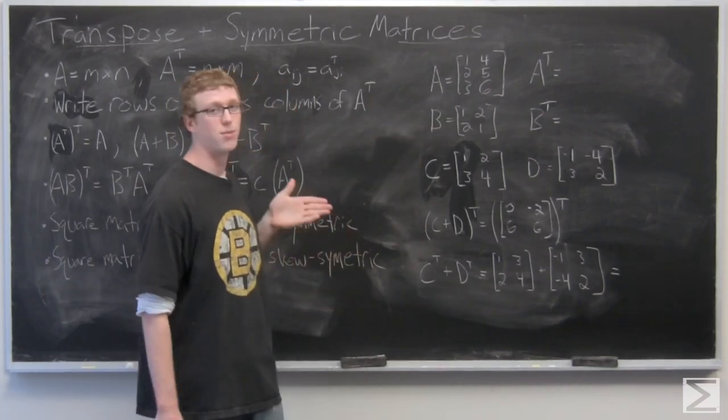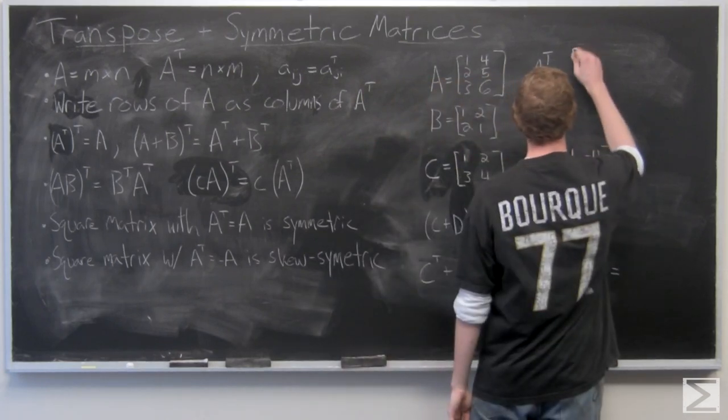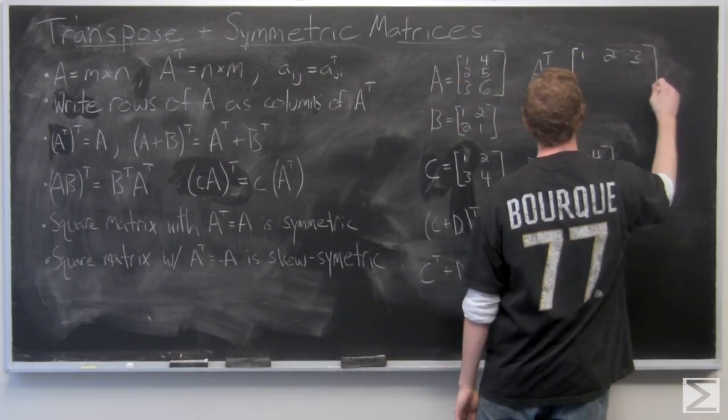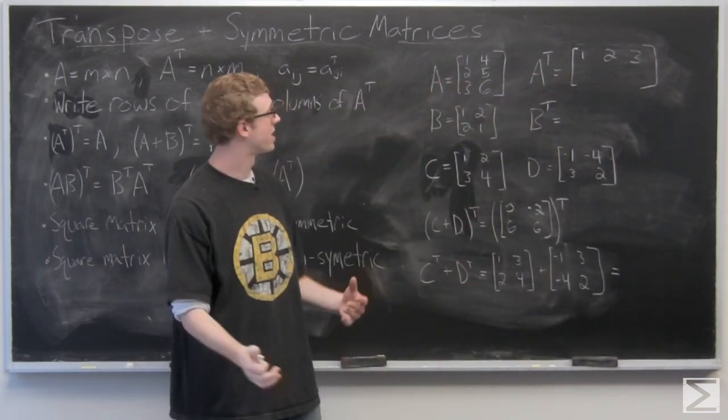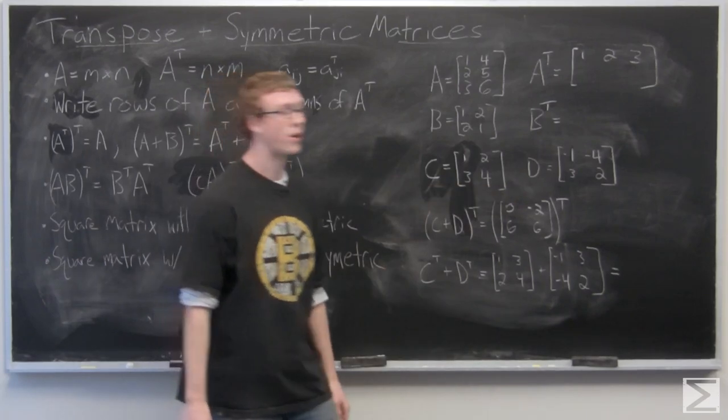So 1, 2, 3 is going to become a row across: 1, 2, 3. And 4, 5, 6 is going to become a row across as well.